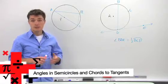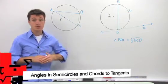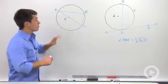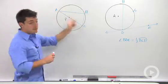When you have an angle inscribed inside a semicircle, there's something special that happens. So if we look at this problem right here, we have a diameter, AC.